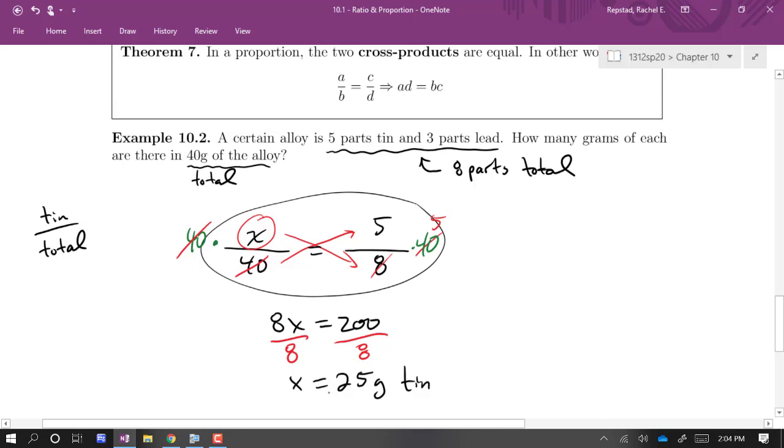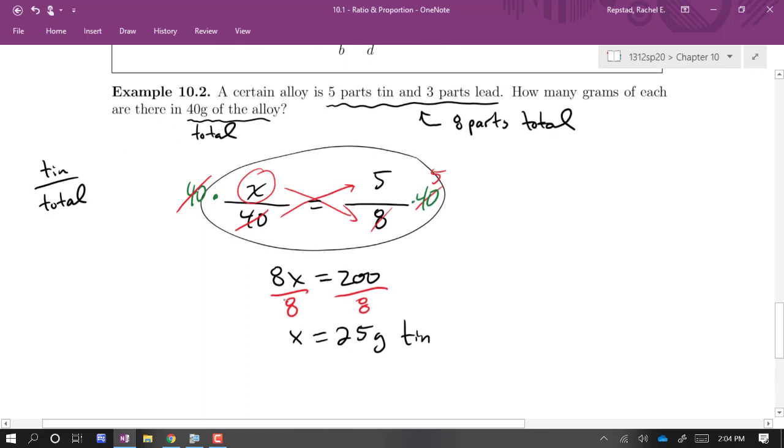We want to know how many grams of each there are in the alloy. So if there's 40 grams total, then of course we're going to subtract the 25 grams of tin and that gives us 15 grams of lead.